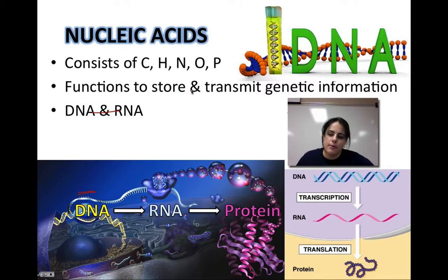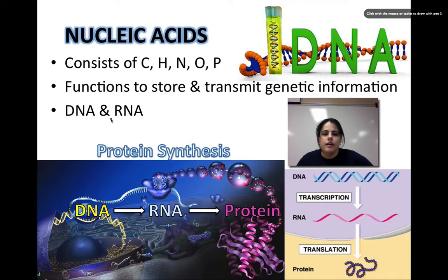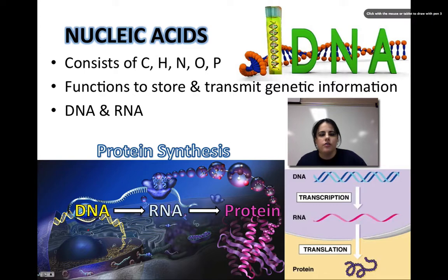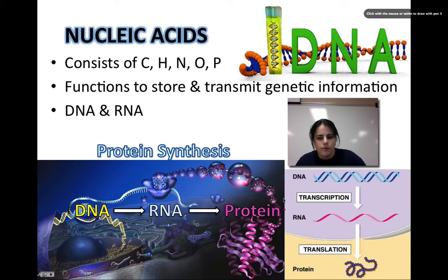They function to store and transmit genetic information — so this is your genetic material. DNA and RNA are the two major types. We use DNA and RNA in a process called protein synthesis. The DNA, which is found in the nucleus of our cells, sends a copy called RNA out into the cytoplasm to be read by ribosomes to form the proteins that make our body.